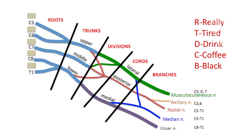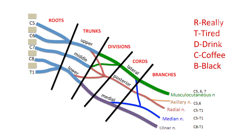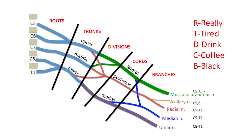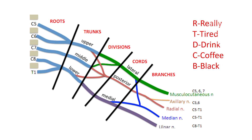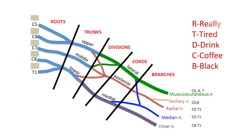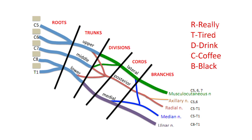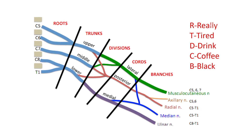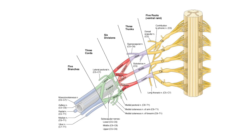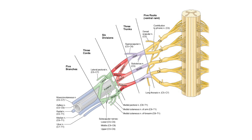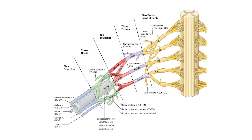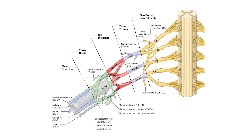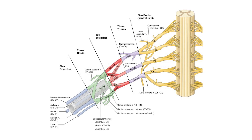The brachial plexus architecture: the brachial plexus is subdivided into roots, trunks, divisions, cords, and branches. Several mnemonics can be used to remember this architecture — one of those is 'Really Tired? Drink Coffee Black.' Typically, the brachial plexus is composed of five roots, three trunks, six divisions, three cords, and terminal branches.